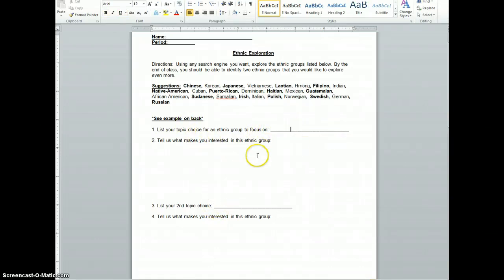So, write that down on the line which ethnic group you'd like to look at. And then tell us what makes you interested in this group. Don't feel like you have to choose one of these ethnic groups. For example, there are Greeks that people are doing projects over. They are not on this list.